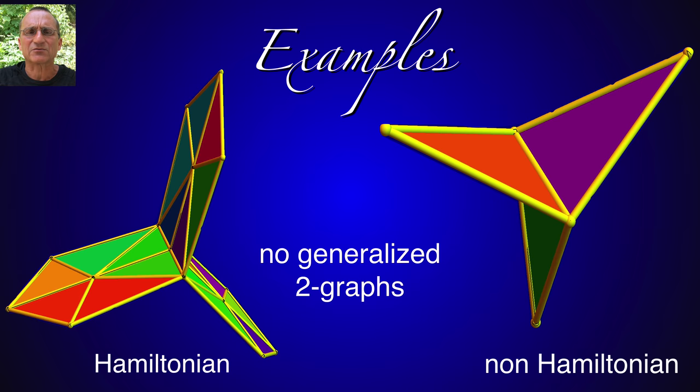Here we see to the right non-Hamiltonian example the windmill graph and the barycentric refinement to the left has now become Hamiltonian.